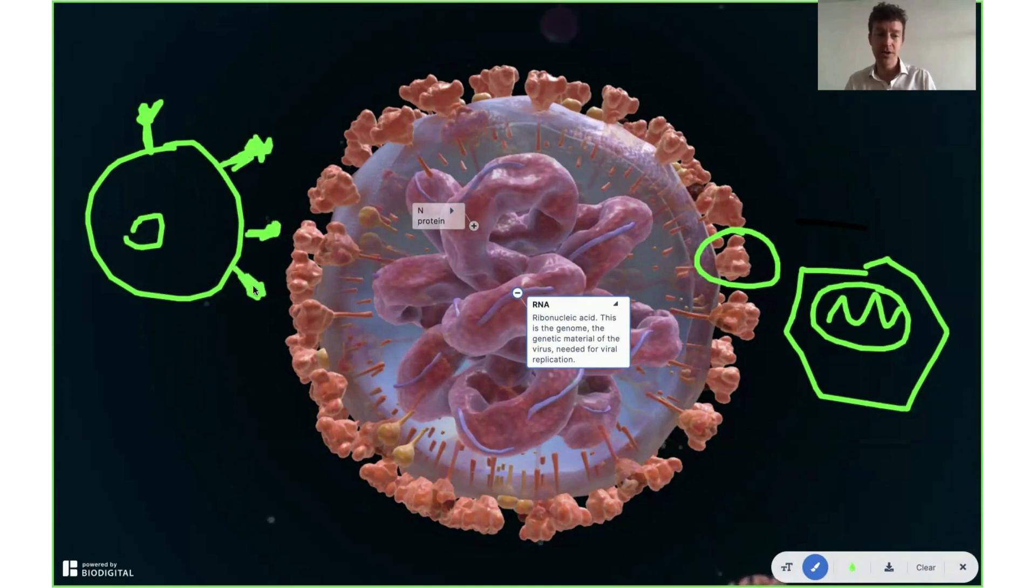And so because of that, your immune system will recognize these spike proteins as foreign and create these antibodies against them, just like you saw in the previous animation. So that's how the vaccine works.